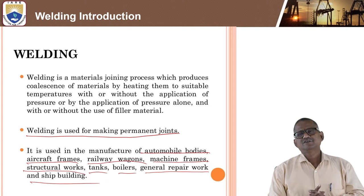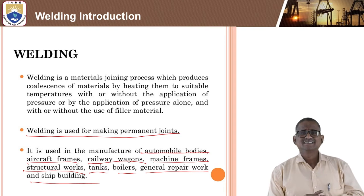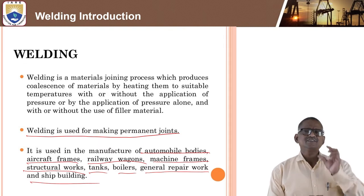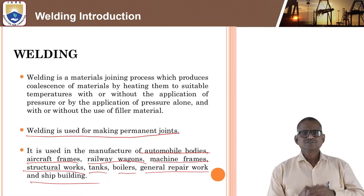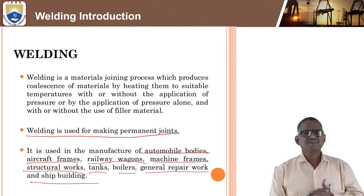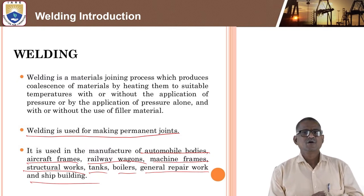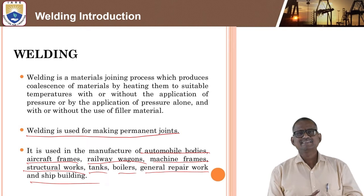Welding itself started during the Second World War, because at that time there was a lot of destruction — damage to buildings, industries, and machinery. From that onwards welding also developed. Applications span automobile, aircraft, railway wagons, household sectors, machinery frames, structural works, tanks, boilers, general repair work, and shipbuilding. This is what we call a permanent joint.